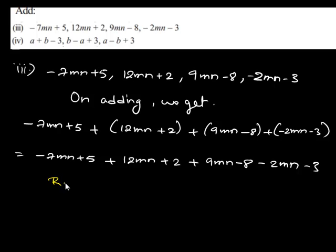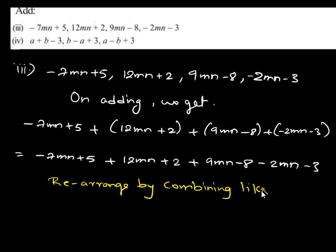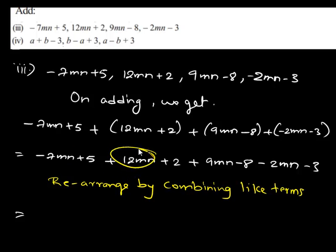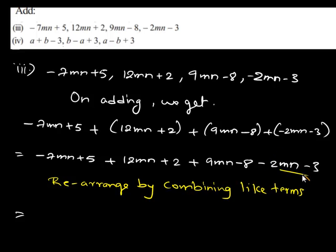Therefore, let us rearrange by combining the like terms. We know that like terms are those terms having the same algebraic factors. The first term in this given expression is negative 7mn, so the variable factor of this term is mn. Let us search for another term having the same variable factor. Here, 12mn has the same variable factor mn, and 9mn also has the same variable factor mn.